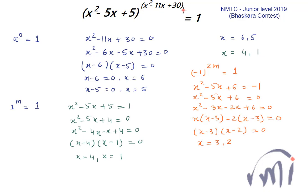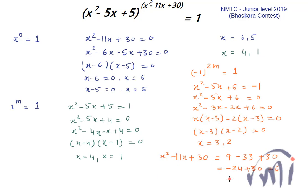For x = 3: x² - 11x + 30 = 9 - 33 + 30 = 6, which is even. For x = 2: x² - 11x + 30 = 4 - 22 + 30 = 12, which is also even. Since the exponent is even in both cases, (-1) raised to an even power equals 1, so x = 3 and x = 2 also satisfy the equation.